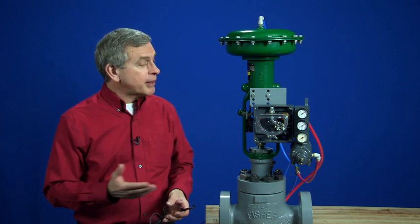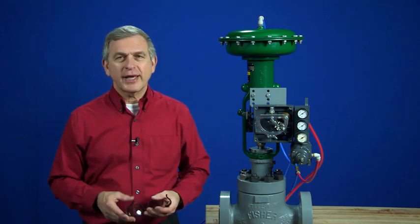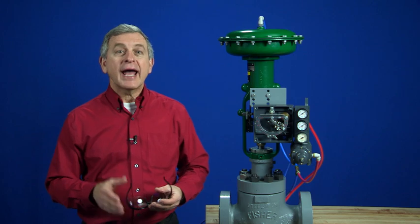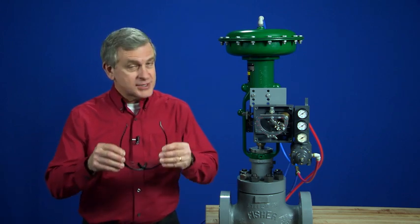As you can see, it's already properly mounted onto this Fischer 657 size 40i direct acting actuator, and the beam alignment has been double-checked. So now, we're ready to set zero and span.